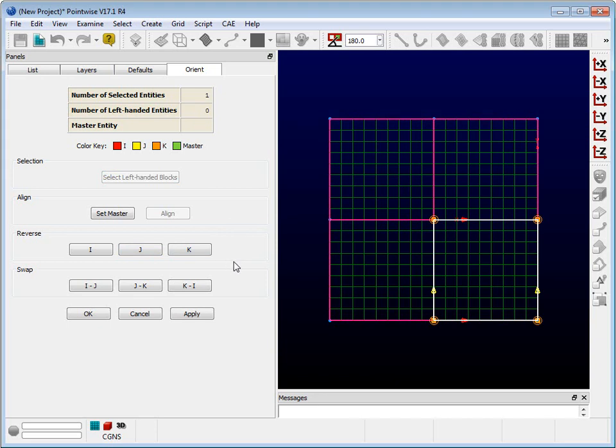This method could be cumbersome if you have a lot of blocks. So let's talk about the other method, which you may find easier. This method involves selecting one block and calling it the master, and then we select all the others and push the Align button. First, let me undo the changes to our bad block.